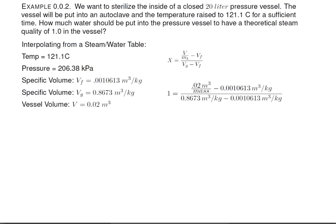Now we'll do another example. Suppose I want to sterilize the inside of a closed 20 liter pressure vessel. The vessel will be put into an autoclave and the temperature raised to 121.1 C for a sufficient amount of time. How much water should be put into the pressure vessel to have a theoretical steam quality of 1 in the vessel? Well, the first thing we have to do is go to a steam table and look up 121.1 degrees C.